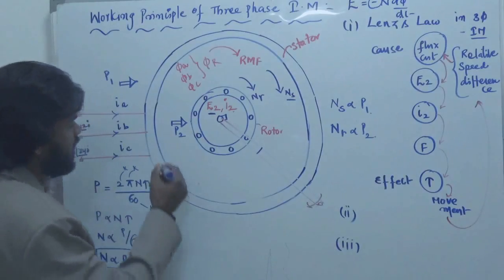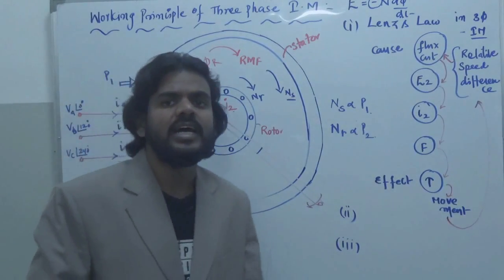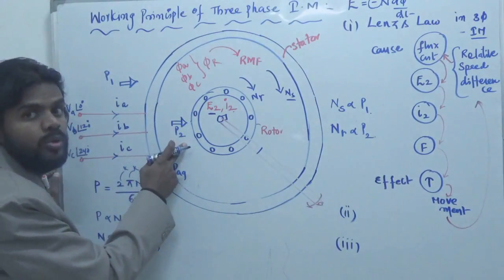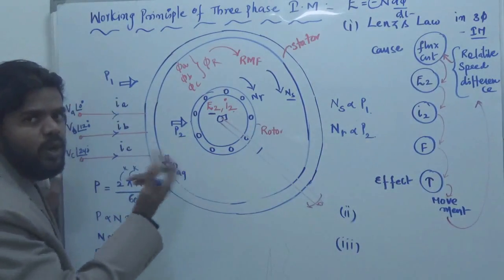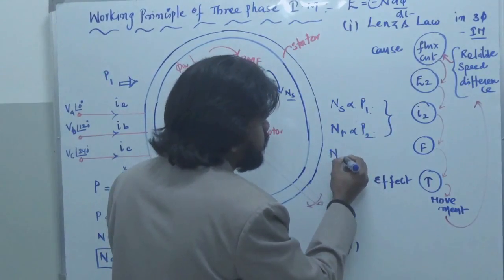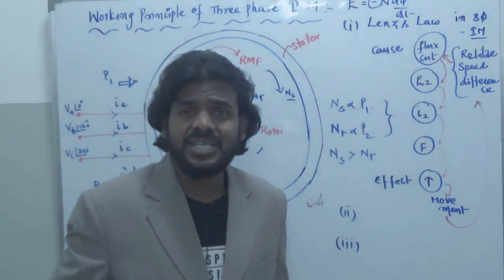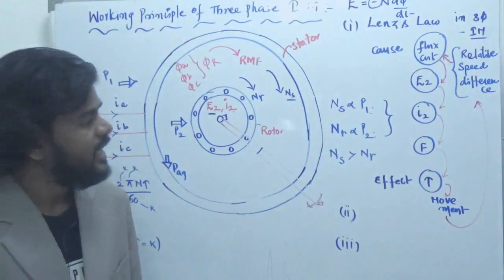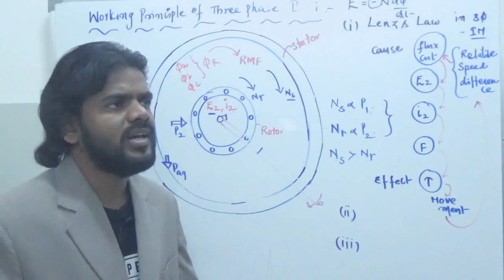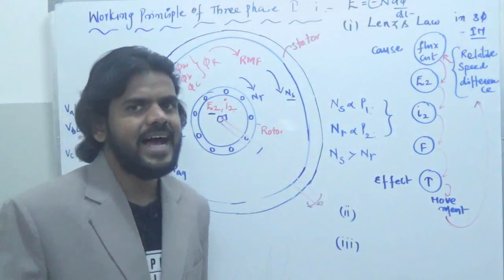Obviously P1 is higher. In the air gap there is a certain amount of power lost, called P_ag. While crossing the air gap, some flux leaks, causing this air gap loss. So P2 = P1 − P_ag, meaning P2 is always less than P1. Therefore Ns will always be higher than Nr — the rotor has no possibility of catching the speed of the stator flux.